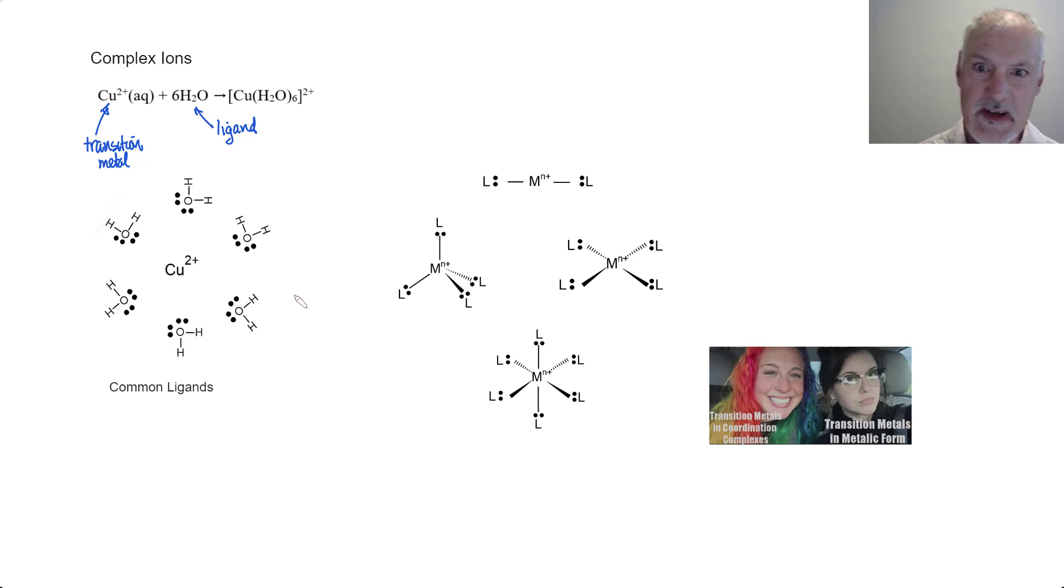A ligand is a species capable of donating a pair of electrons. In my diagram below we can see that pair of electrons in water is being donated to that copper, and similarly with these remaining water molecules. So ligands are much like what we call Lewis Bases, substances capable of donating pairs of electrons.